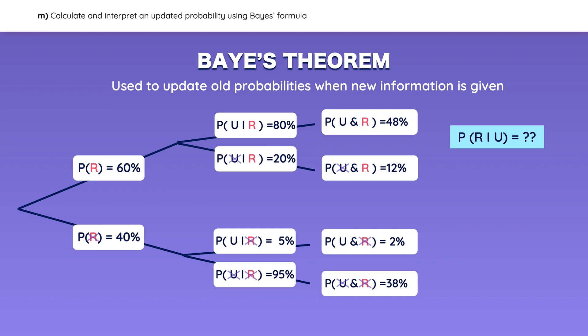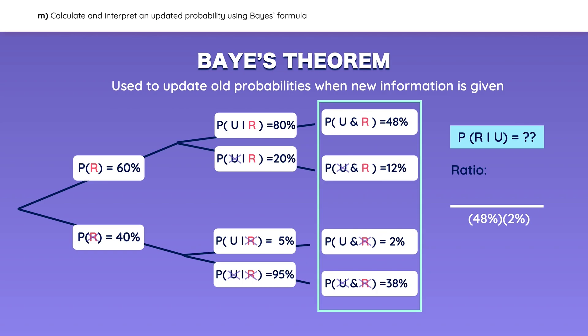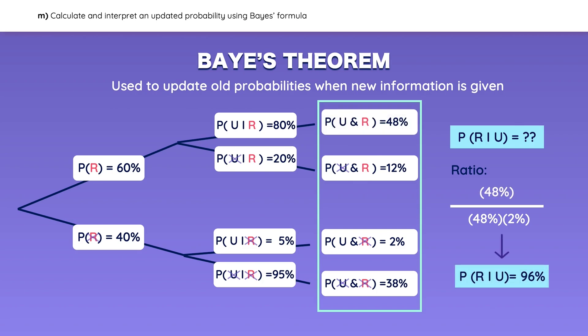What is the updated probability that it rained, given that the person brought an umbrella? You have to use Bayes' theorem to update the probability of rain because there is new information stating that they brought an umbrella. Bayes' theorem uses the joint probabilities to create a ratio. All the outcomes where they brought an umbrella go in the ratio's denominator. Out of this group, the one where it rained becomes the numerator. So the updated probability of rain given that they brought an umbrella is now 96% — a huge change from the initial probability of rain, which was only 60%.